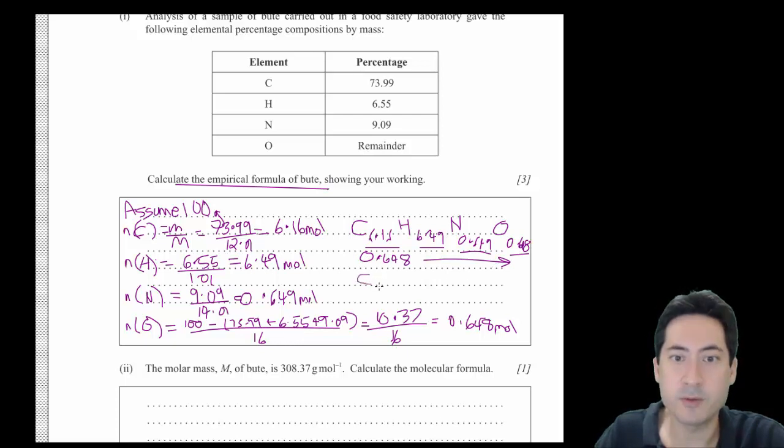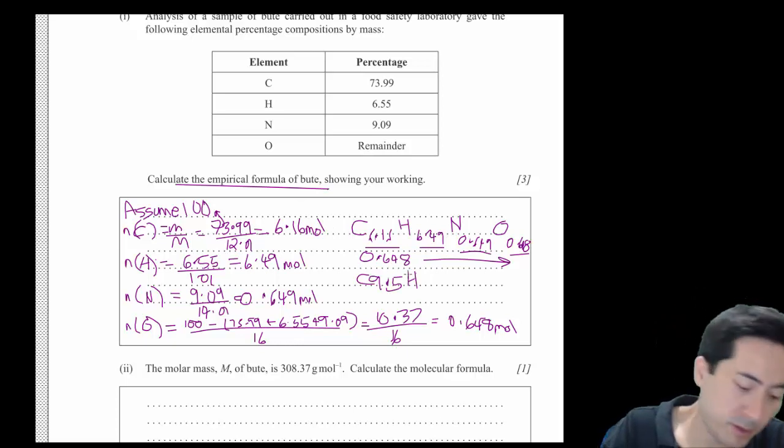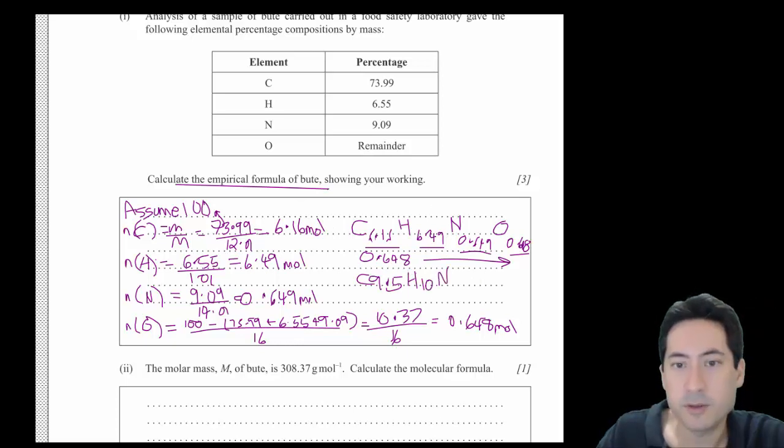That'll give us a final empirical formula of C 9.5, hydrogen 10, nitrogen 1, and oxygen 1. If you see a 0.5, you've got to get all these to whole numbers, so double it. If you see 0.33, you triple it. So for this one, we're going to have to double these things.